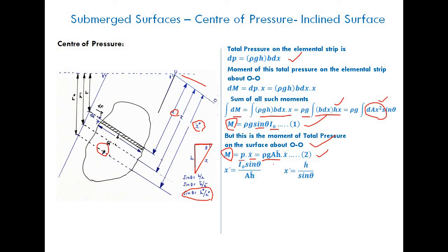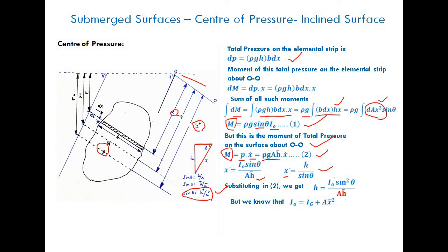Comparing the two expressions for M — equations one and two — we get x-star = Io·sinθ / (A·h-bar). Now from the triangle relationship, x-star = h-star / sinθ, so substituting for x-star gives h-star = Io·sin²θ / (A·h-bar). We have expressed h-star, the vertical distance of the center of pressure from the free surface, in terms of Io, sinθ, A, and h-bar.